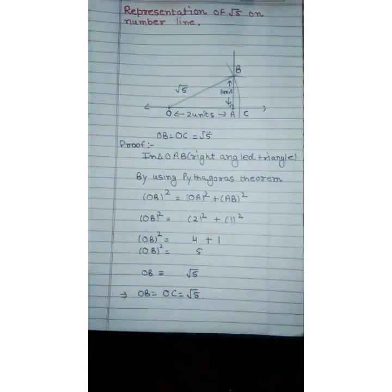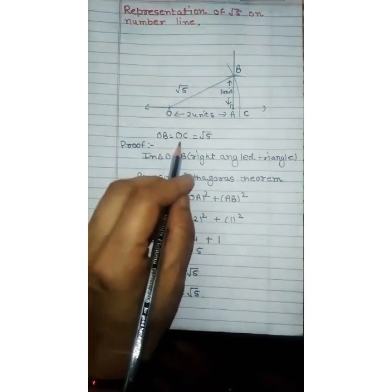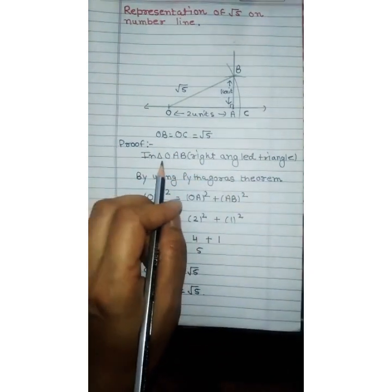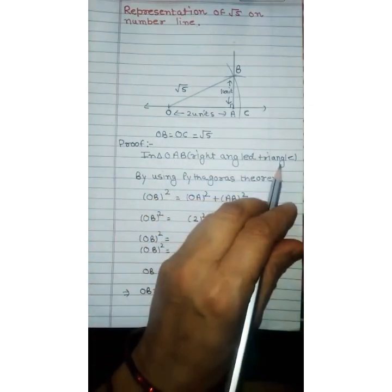Now we will verify that OC is equal to √5 units. In triangle OAB which is a right angled triangle.